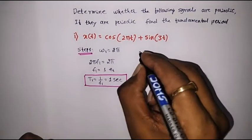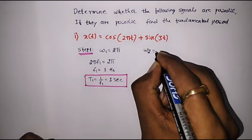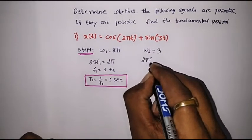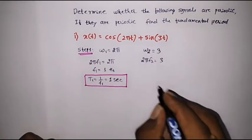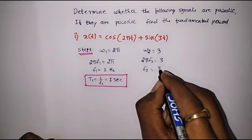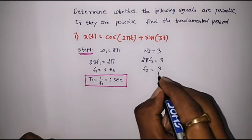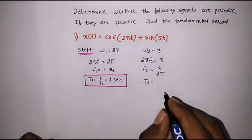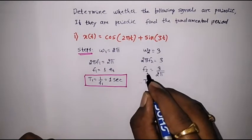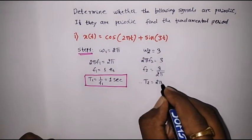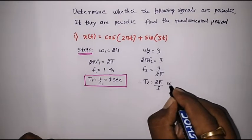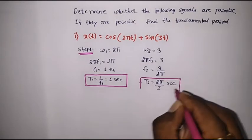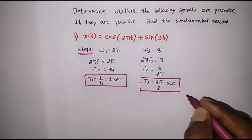With respect to the second signal, we have omega2 equal to 3. Therefore 2πf2 is equal to 3, so f2 is equal to 3 divided by 2π. Therefore T2 is equal to the reciprocal of f2, that is 2π/3 seconds. This is the fundamental period of the second signal, sin(3t).